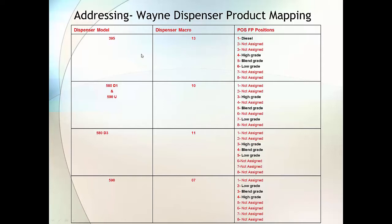For example, on the left-hand side here we have a 395. If you look, diesel is programmed in the dispenser itself to be in the first position.